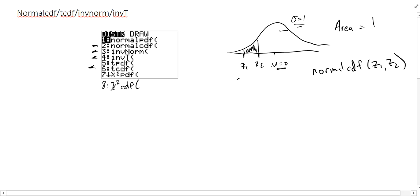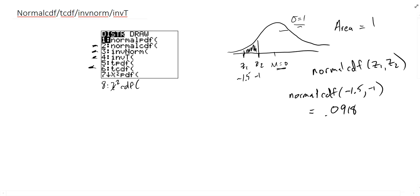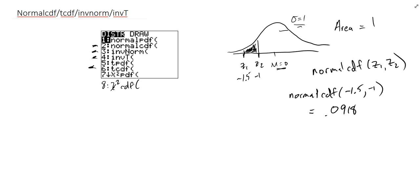Some calculators also ask for a mean and standard deviation — since we've converted to z-scores, we use mean of zero and standard deviation of one. For example, going from negative 1.5 to negative 1: normalCDF(−1.5, −1) gives 0.0918. So about 9% of values are within this range. That's also a probability — there's a 9% chance of choosing a value at random in that interval.